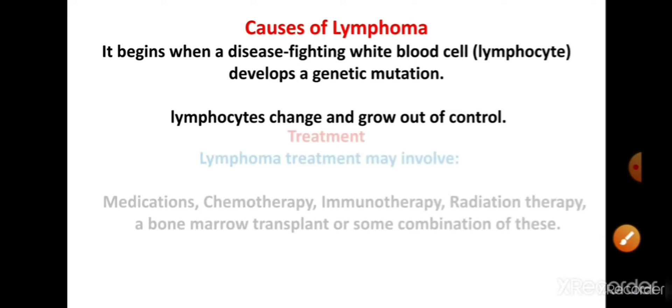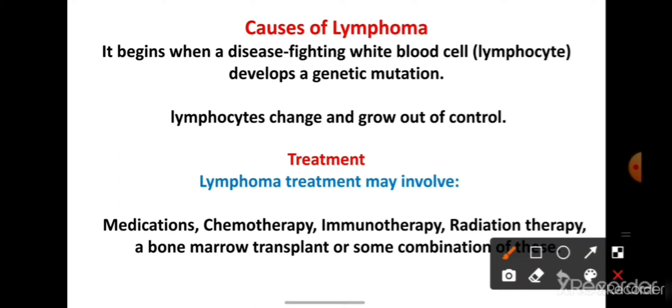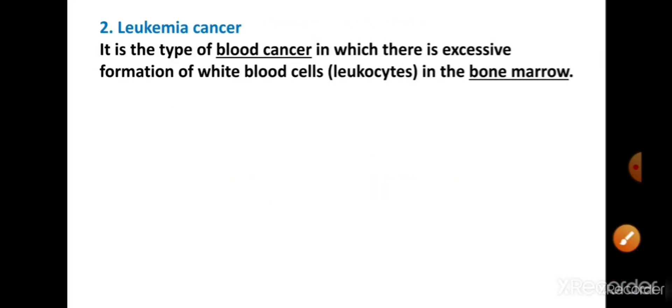Treatment of lymphoma: lymphoma के कई types हैं और इस वजह से इसकी treatment भी उसी type पर depend करती है। Doctor उसकी severity के अनुसार treatment suggest करते हैं। Basic treatments में हैं medication, chemotherapy, immunotherapy, radiation therapy, और bone marrow transplant। ये कुछ basic treatments होते हैं lymphoma के।